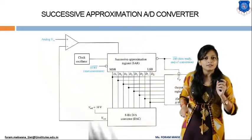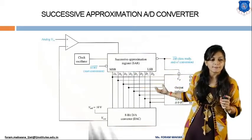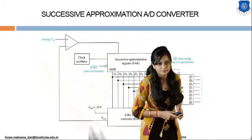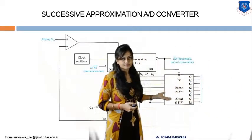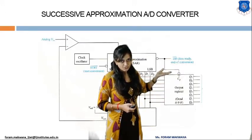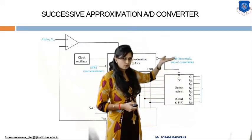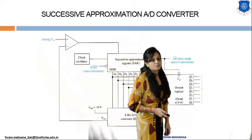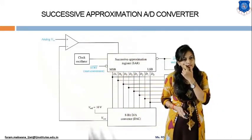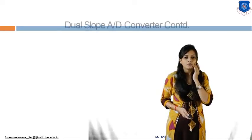The output is stored in an output register which has outputs Q0, Q1, Q2 through Q7 — 8 outputs in total. This completes the circuit diagram of the successive approximation ADC.